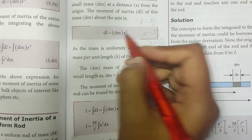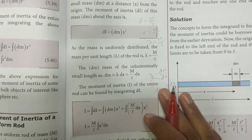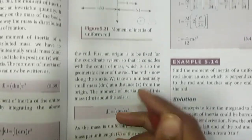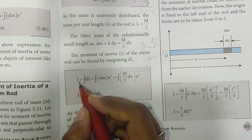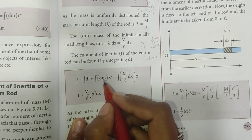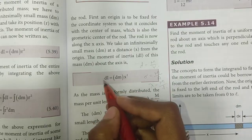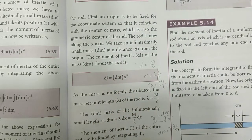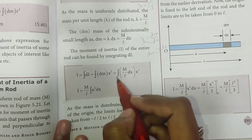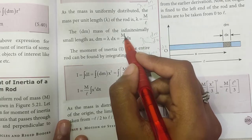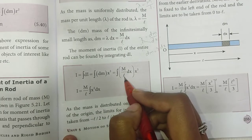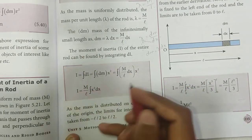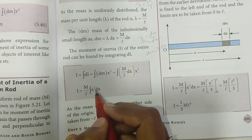In place of dm we substitute this value. Now we have the small moment of inertia dI; to get the whole moment of inertia I we integrate. So I = ∫dI = ∫dm · x² = ∫(M/L) · x² dx. Since M/L is a constant, I = (M/L) ∫x² dx.